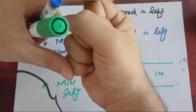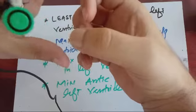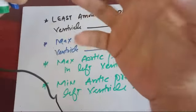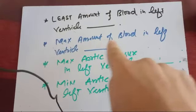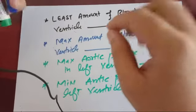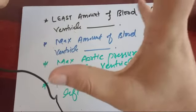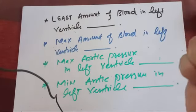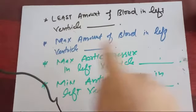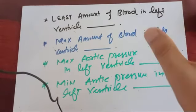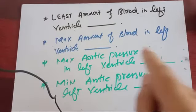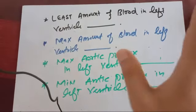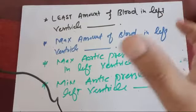During isovolumetric relaxation, the ventricle dilates but both valves are closed, so the least amount of blood in the left ventricle is during isovolumetric relaxation. Maximum amount of blood in the left ventricle is during isovolumetric contraction. However, if the question asks when maximum blood is reached, that is actually late diastole.